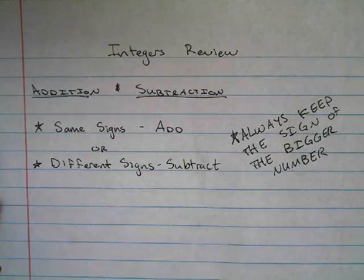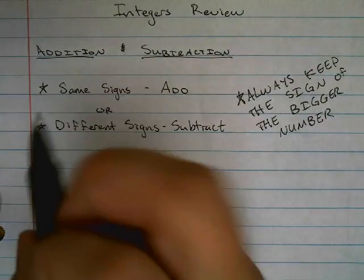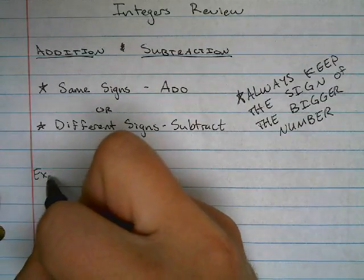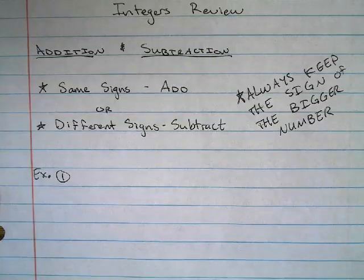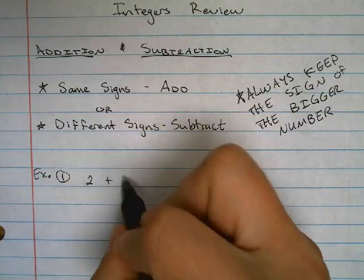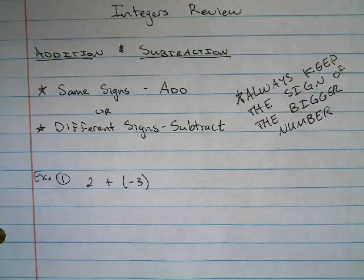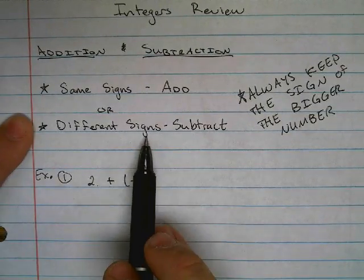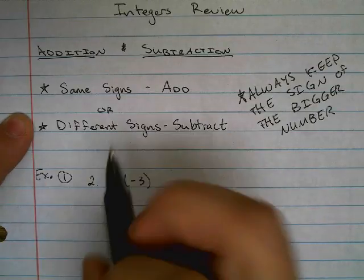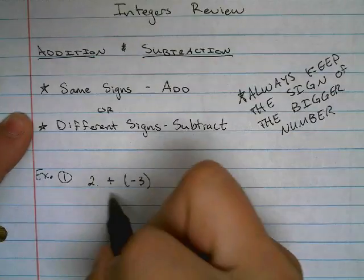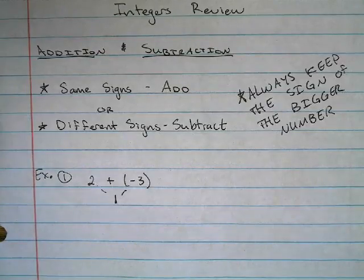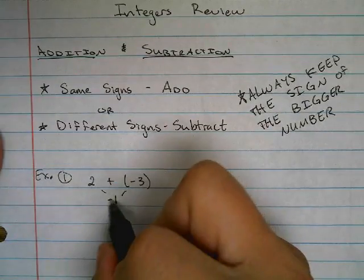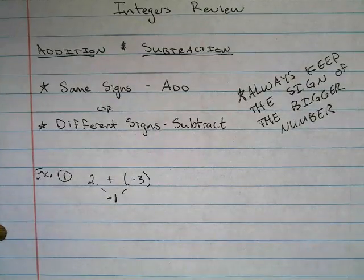Here's an example. Say I have 2 plus negative 3. We have a positive 2 and a negative 3, so we have different signs — so we'll subtract. 3 minus 2 is 1. And we're going to keep the sign of the bigger number, so we keep the negative coming from the 3. The answer is negative 1.